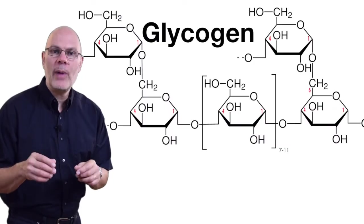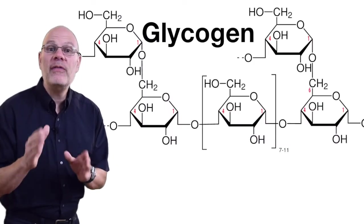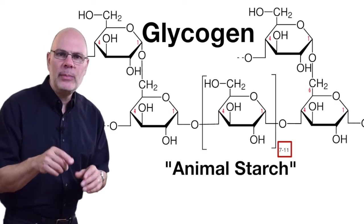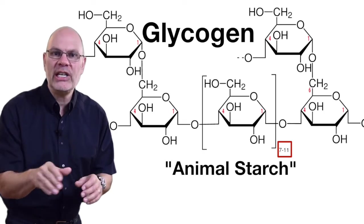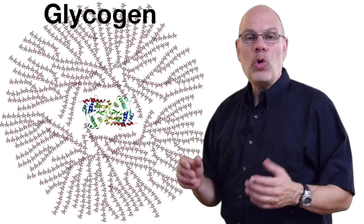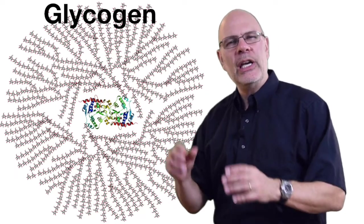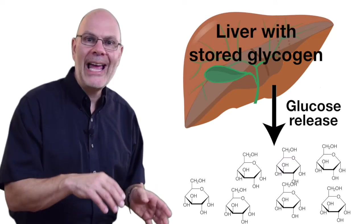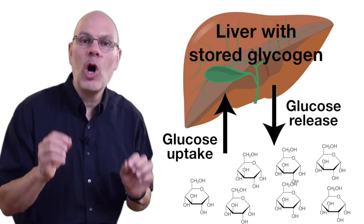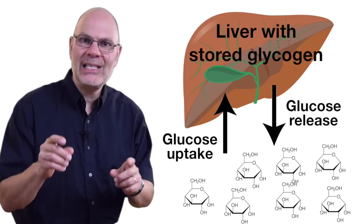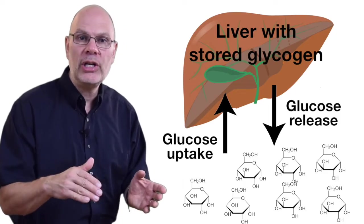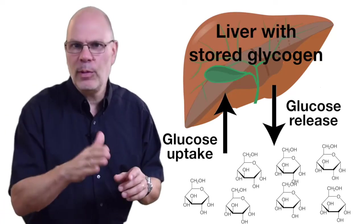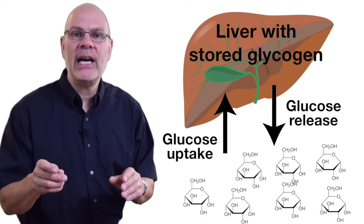Glycogen is an energy storage molecule made by animals that's structurally very similar to amylopectin — in fact, it's sometimes called animal starch. That subscript indicates the number of glucose monomers chained together in that part of the molecule. Glycogen gets stored in huge molecular complexes in our liver tissue and our muscles. When our blood sugar level gets low, our bodies will convert stored glycogen into glucose. On the other hand, after a carbohydrate-rich meal, our bodies will take excess blood glucose and convert it into glycogen. This interconversion is controlled by hormones like insulin and glucagon, and breakdown of blood sugar homeostasis can cause diseases like diabetes.